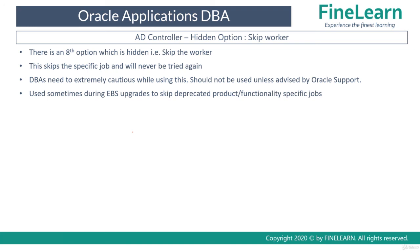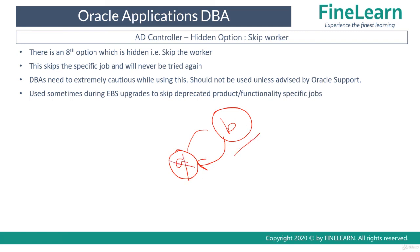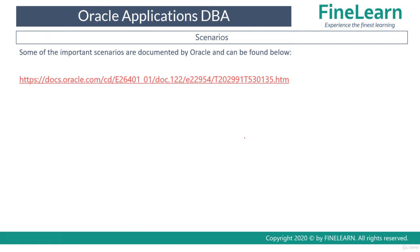You must be very careful about job dependencies. For example, if you skip job A and the next job B depends on data from job A, then job B may also fail. So unless you are very sure, do not use the skip option. All AD Controller scenarios are explained in detail in Oracle documentation, so it is strongly recommended to review the documentation for the correct usage of AD CTRL options.